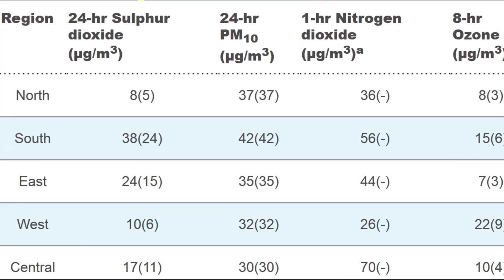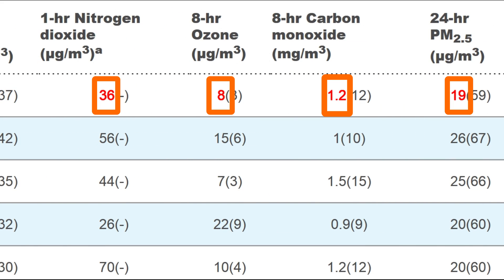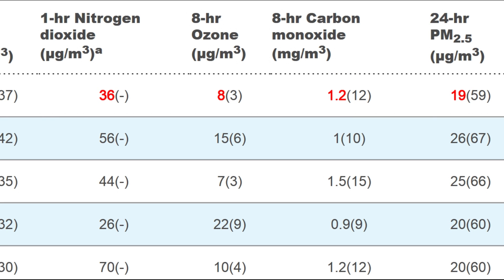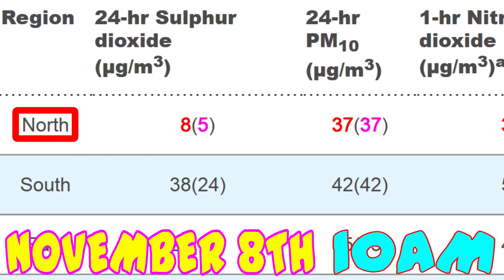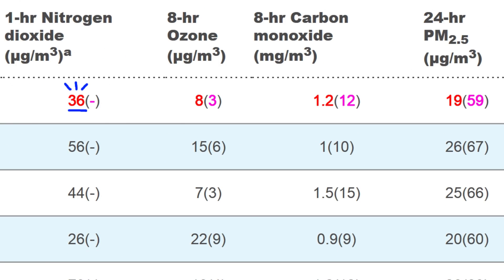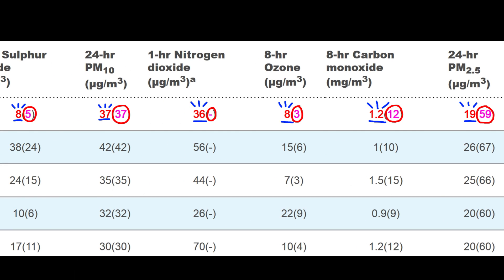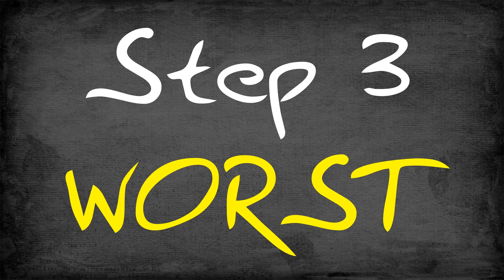The NEA reports the original pollutant measurements, and next to these measurements are the converted PSI numbers reported in parentheses. So for example, on November 8th at 10am in the north, the 24-hour sulfur dioxide measurement was 8 micrograms per cubic meter, or 5 on the PSI scale. The 24-hour PM10 measurement was 37 micrograms per cubic meter, which when converted to the PSI scale is coincidentally also 37. So altogether, we have 6 pollutant measurements which we convert into 6 pollutant PSIs. And now for the easiest step — Step 3: simply take the worst of these 6 different pollutant PSIs, and this is your 24-hour PSI.